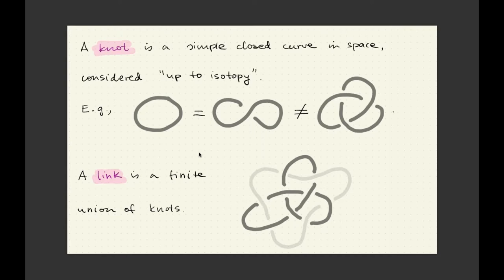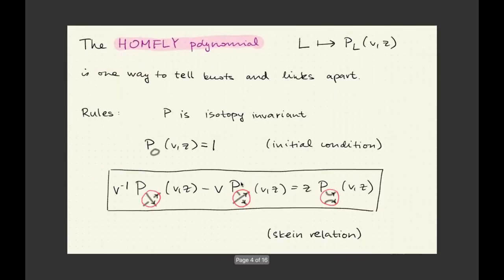This field also studies links, which are just finite unions of knots that can be tangled together in all kinds of interesting ways. This is roughly what this is about, and then one wonders how to get any control over this seemingly impossible complexity. There are actually dozens of methods of imposing some kind of order on these knots. One of them is the HOMFLY polynomial.